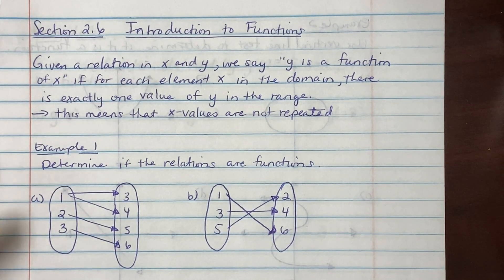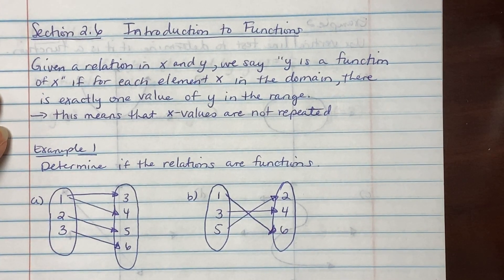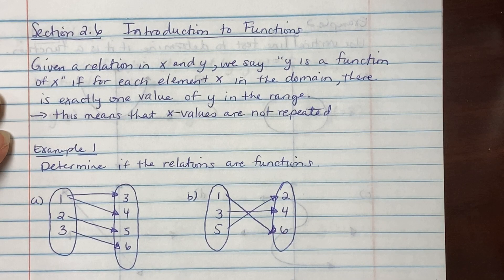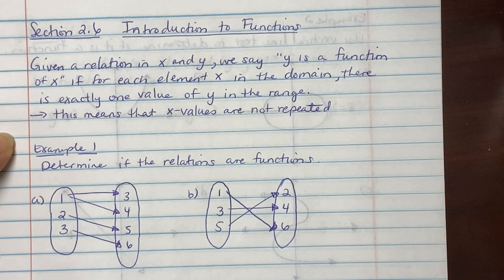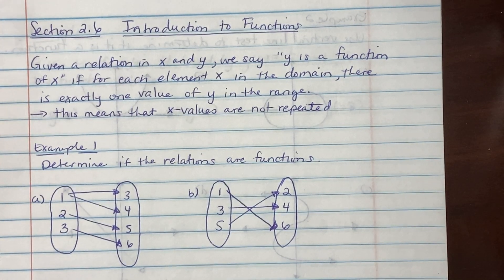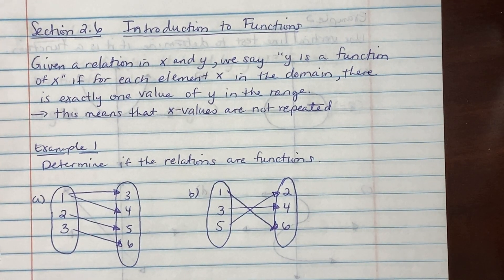Section 2.6: Introduction to Functions. Given a relation in x and y, we say y is a function of x if for each element x in the domain, there is exactly one value of y in the range. This means that the x values are not repeated.